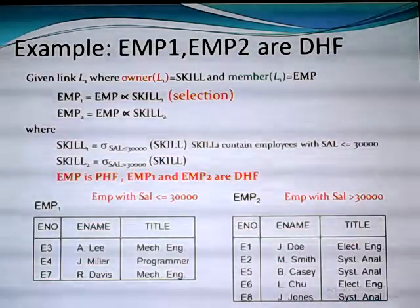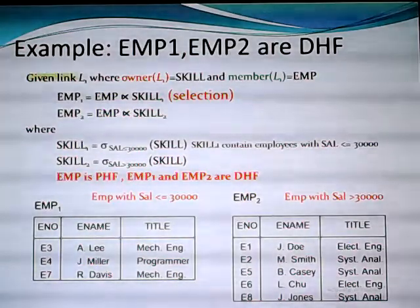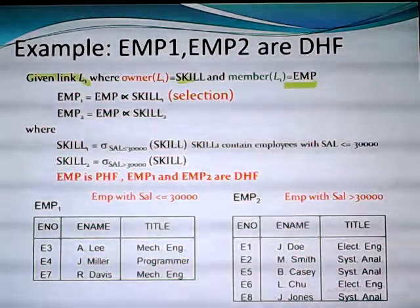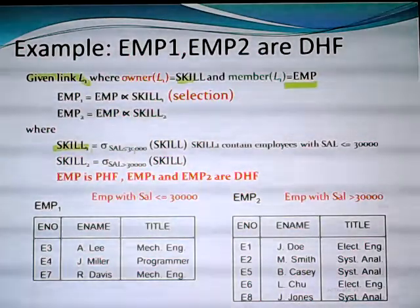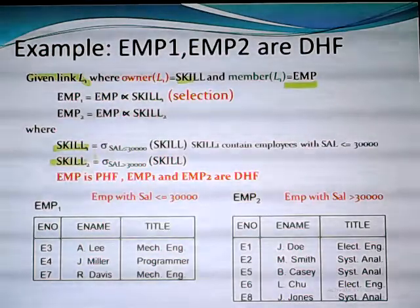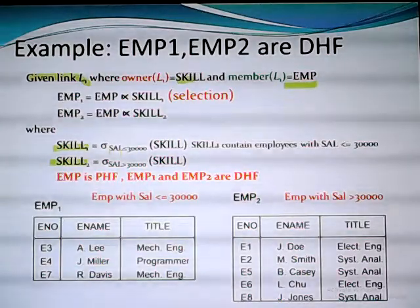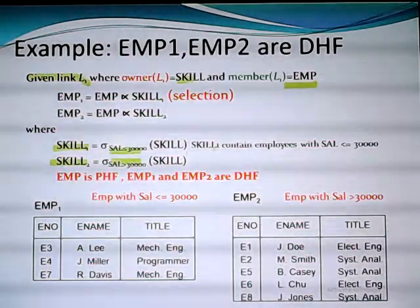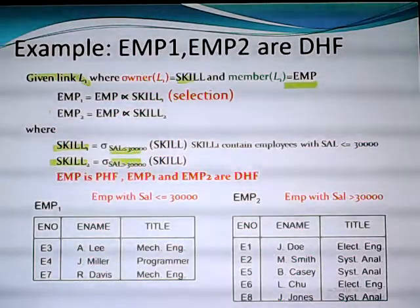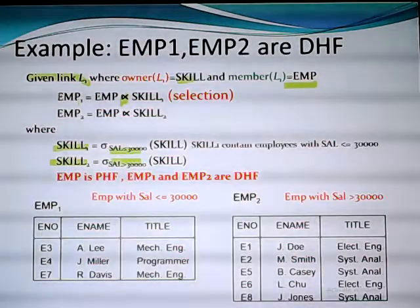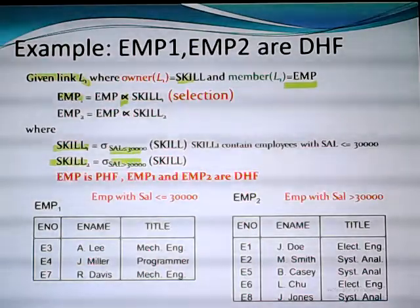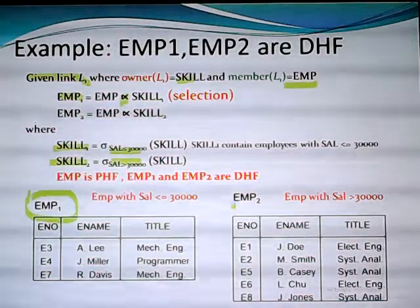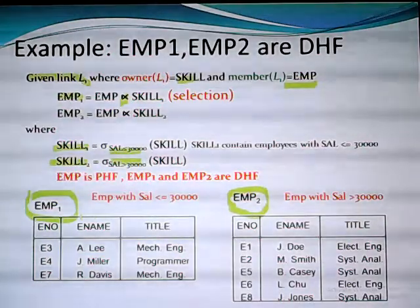Now I give an example of derived horizontal fragmentation using link L1. As you know, the owner of L1 is skill and the member is employee. For skill, you have two primary horizontal fragmentations: Skill1 and Skill2. They are created by using a selection with the conditions shown here. Skill1 and Skill2 are primary horizontal fragmentations, but using semi-join we can create a derived horizontal fragmentation. After applying the semi-join you get two partitions — this is the derived horizontal fragmentation.